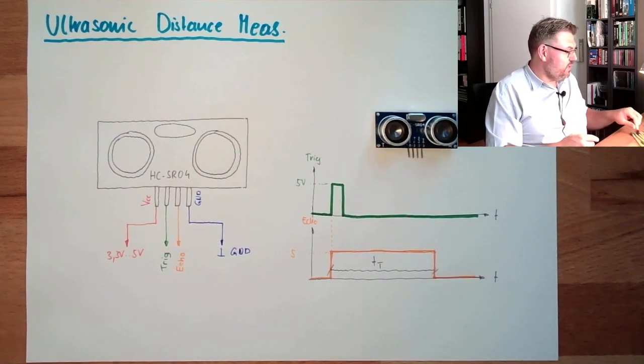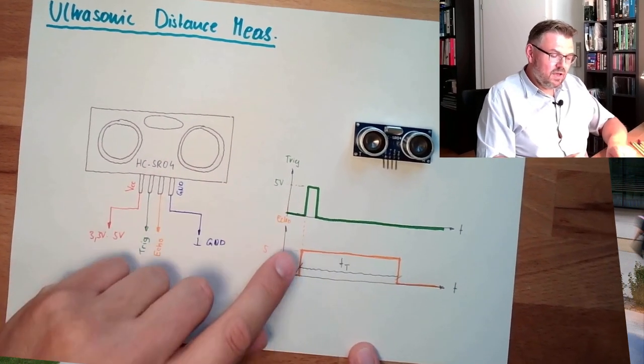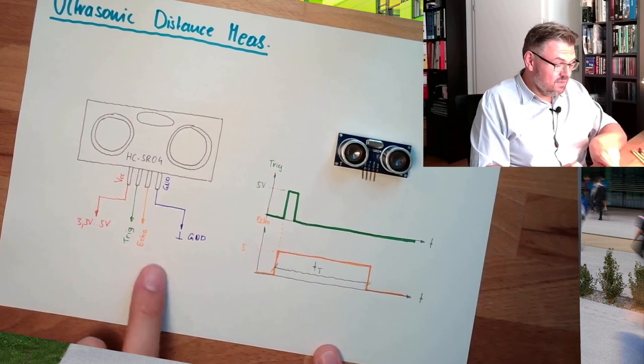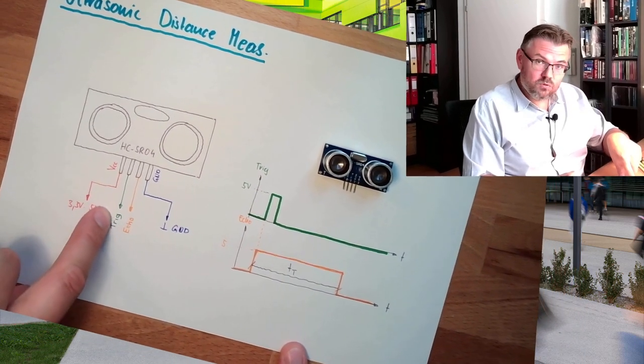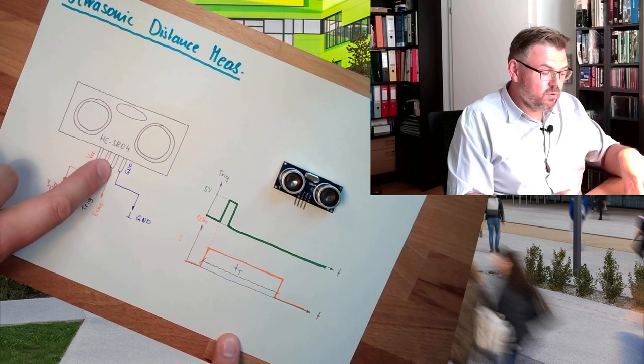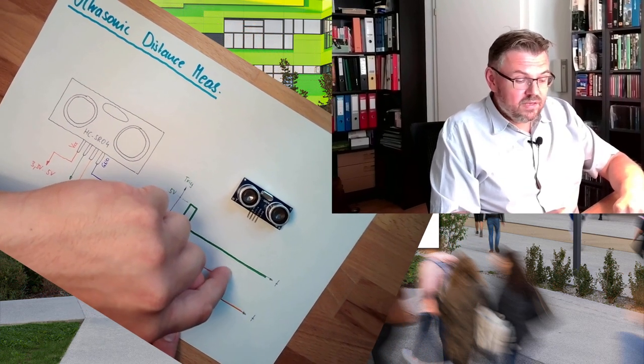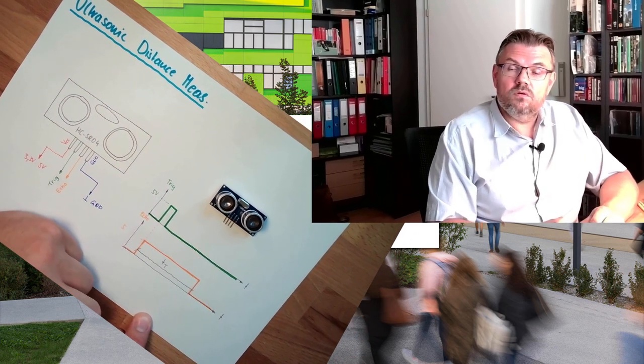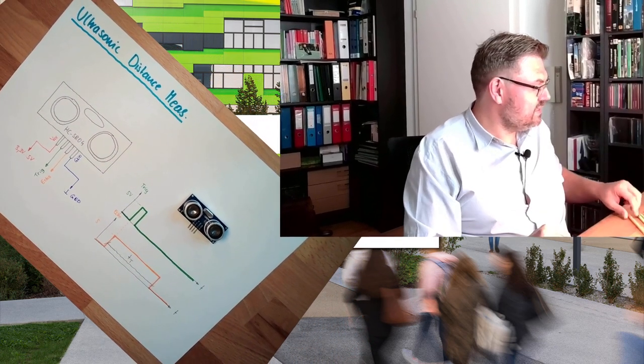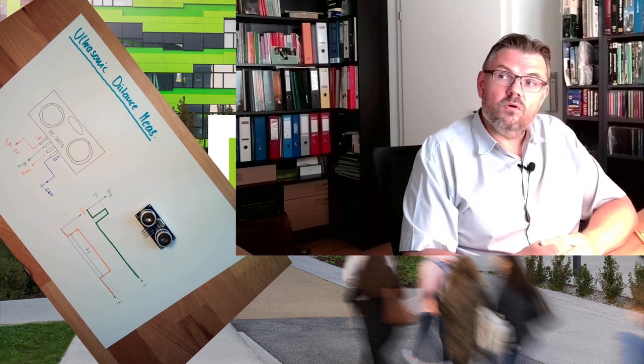So we just have to make sure that we are triggering this, the measurement, and start to listen. So this must be an output of our Arduino. This must be an input. At the output we are triggering with the output. At the input we look how long it takes until we drop to zero. This is how this ultrasonic measurement device is working.